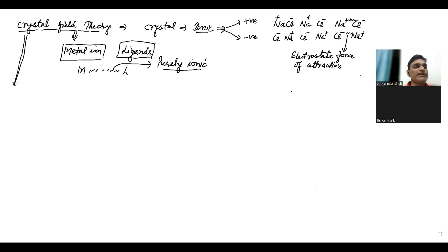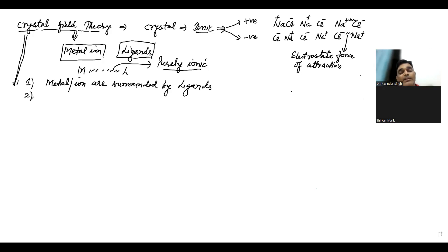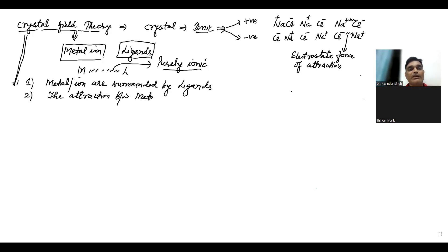Now let's look at its postulates. Point number one: the metal and the metal ions are surrounded by ligands. Point number two: the attraction between the metal ion and the surrounding ligands is 100% ionic — purely electrostatic force of attraction.